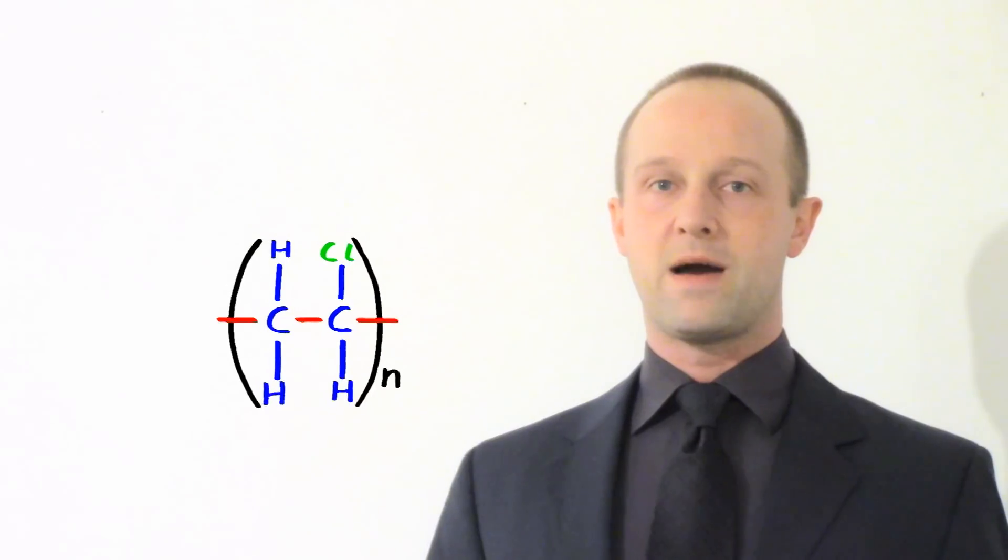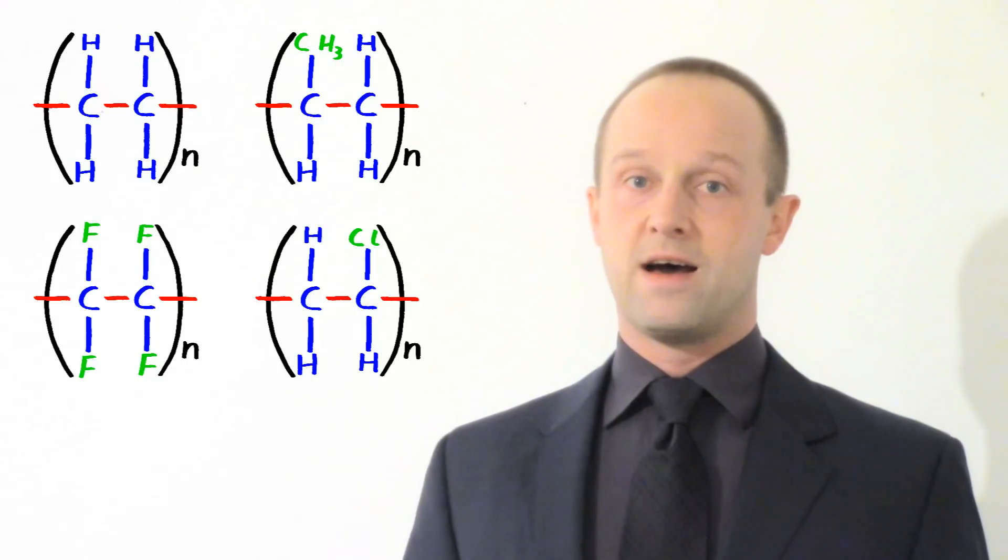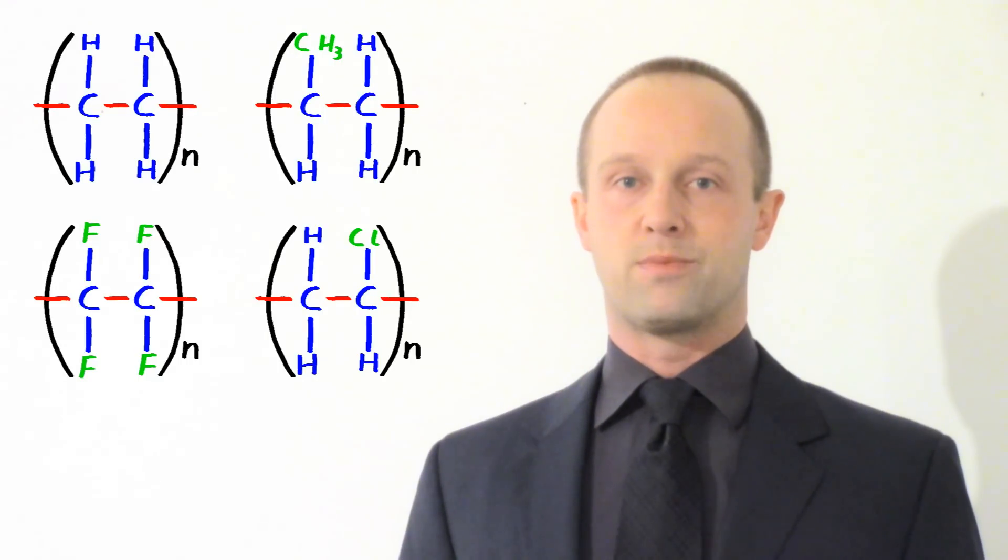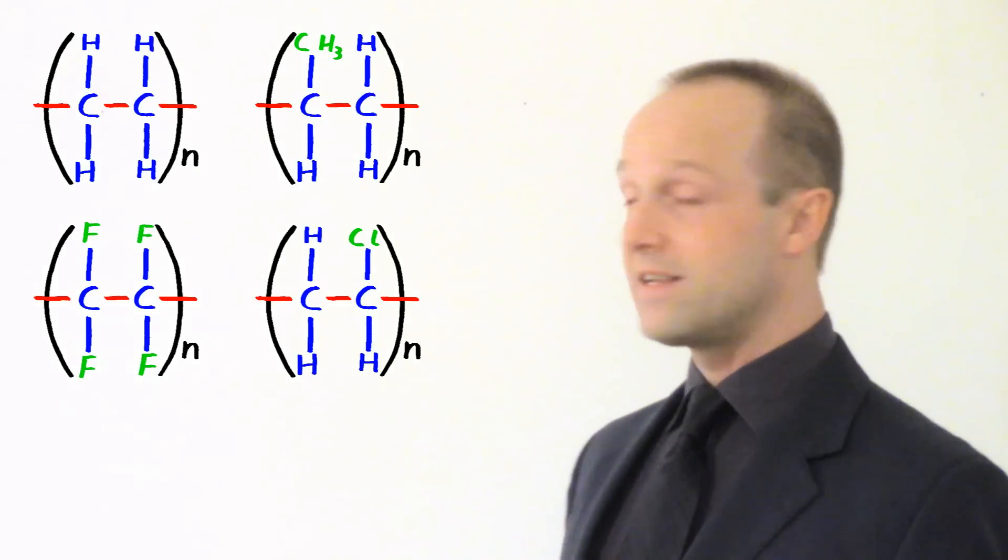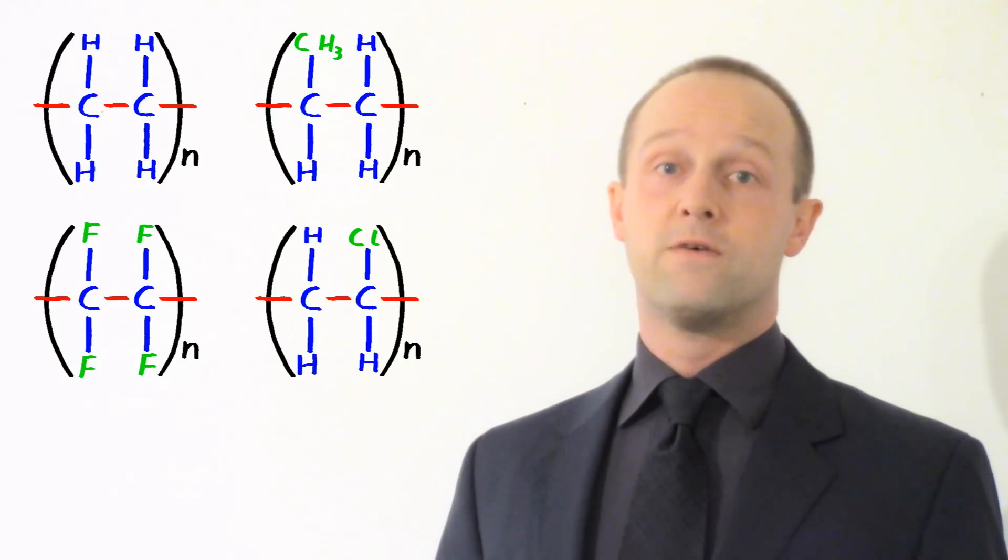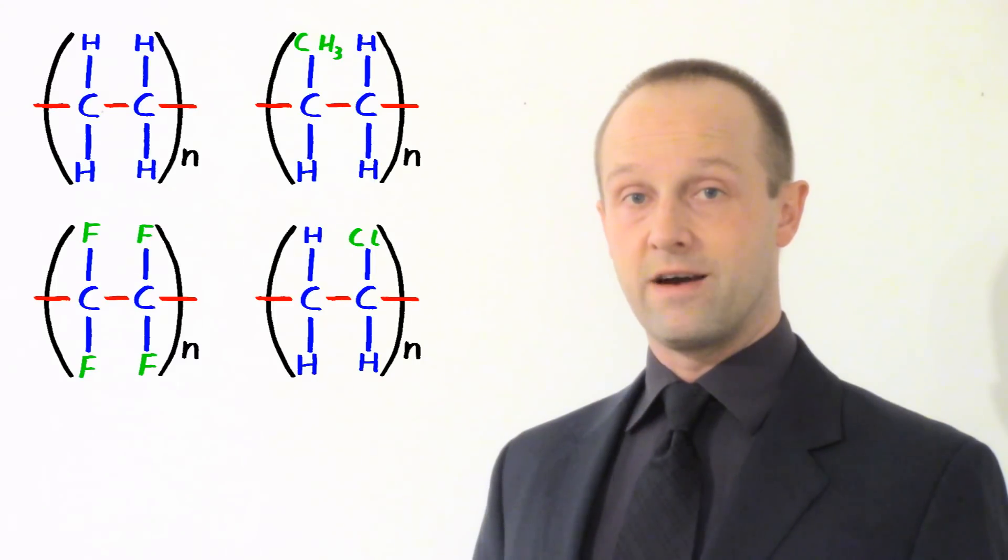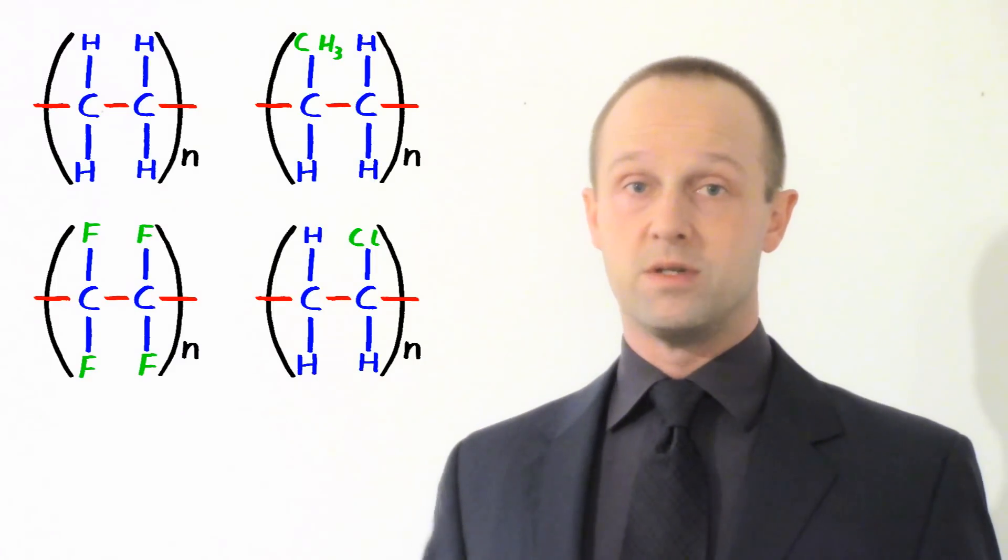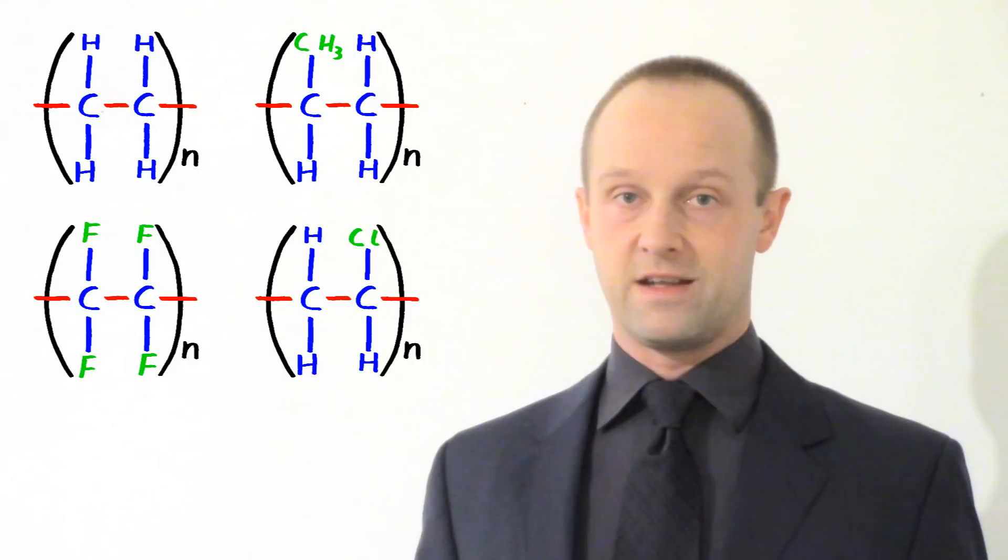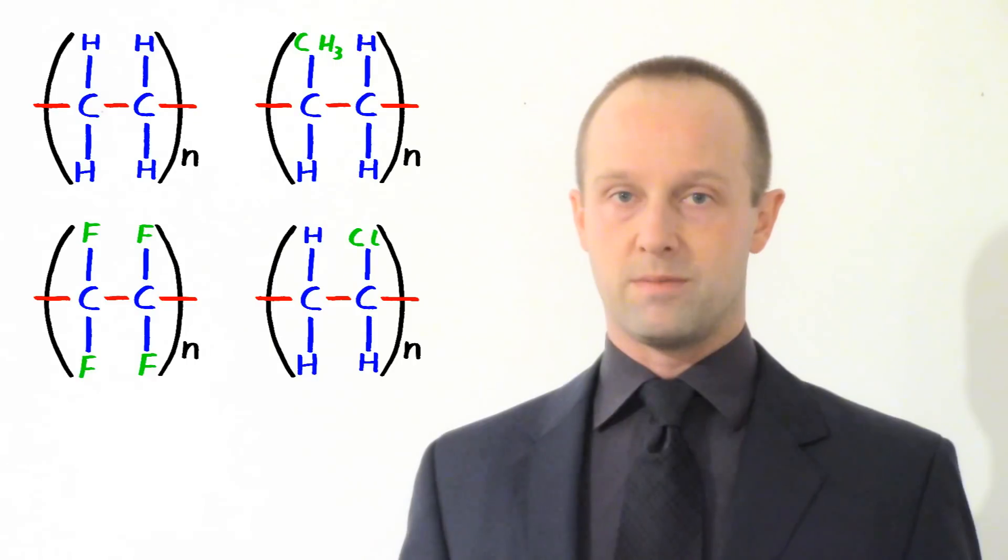Now, the key thing about these different types of polymer is that they have different properties. There's a few things which can affect the properties of polymers. And one of them is getting these different types of monomers forming the polymer. So, for example, with polypropene, with that extra group sticking off the side, it can make the chains of the polymers interact with each other slightly differently. The length of the chains is also important, and the density of the polymer, how it's packed together. All of these things can affect the behaviour of it.